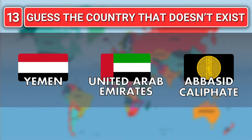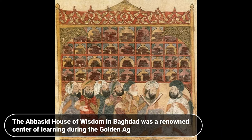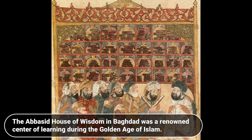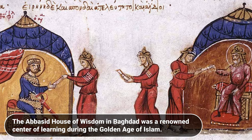Yemen, United Arab Emirates or Abbasid Caliphate? The answer is Abbasid Caliphate. The Abbasid House of Wisdom in Baghdad was a renowned center of learning during the golden age of Islam.